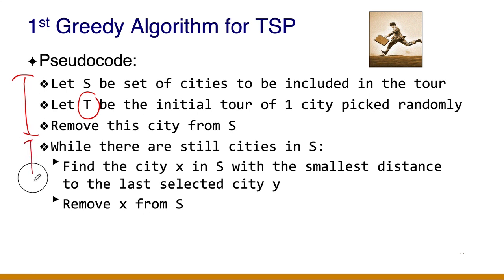After initialization, you enter a loop. Inside this loop, you continue whenever you still have candidates inside S. Whenever you pick a candidate, you pick the city that will generate the smallest distance to the last city you have selected. So you continuously do that — it's a very simple process.